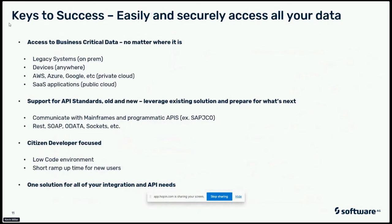The keys to success around this integration layer are: the ability to access all business-critical data no matter where it is; the ability to support API standards from old-school programmatic APIs for COBOL and mainframe systems all the way to current and ever-forming standards like REST, OData, WebSockets, and OpenAPI. The second part is really being citizen developer-focused — you want something very simple with a low-code environment where users can quickly pull things together without months of deep coding, while supporting all API standards and communicating to any system wherever it is.